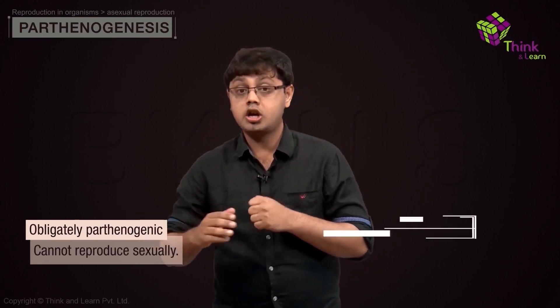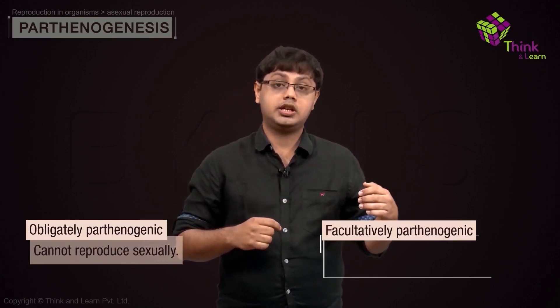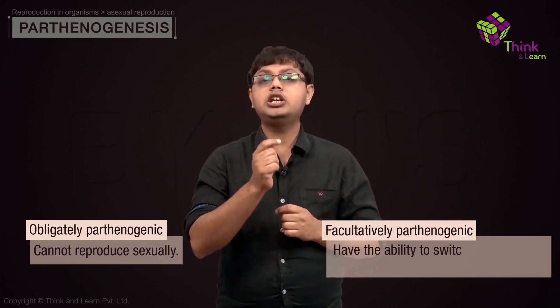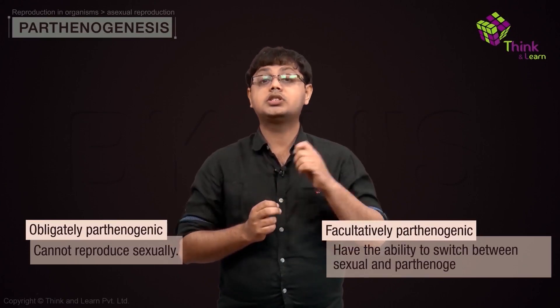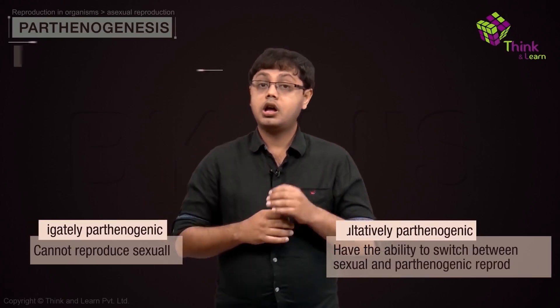A species can be obligately parthenogenic — that is, they can't reproduce sexually at all — or facultatively parthenogenic, meaning they have the ability to switch between sexual and parthenogenic reproduction.